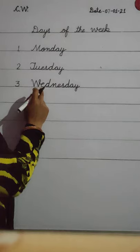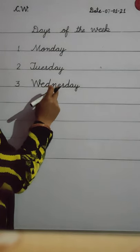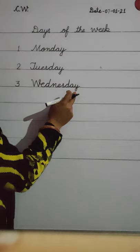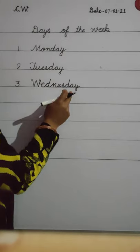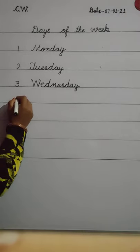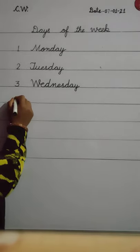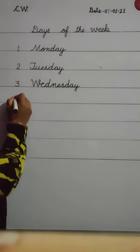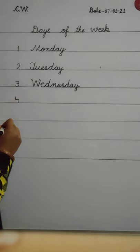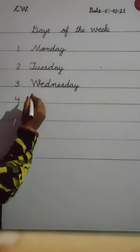Wednesday. W-E-D-N-E-S-D-A-Y. Wednesday. Next, number 4 — fourth day of the week. After Wednesday comes Thursday.